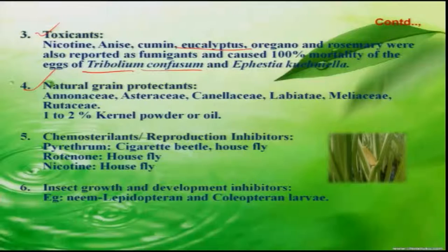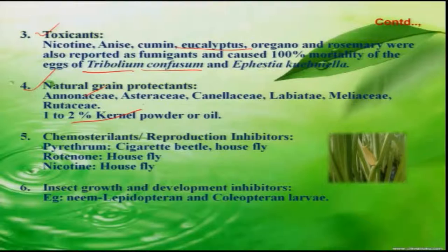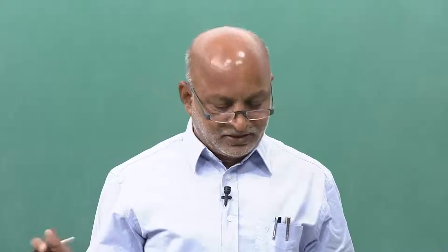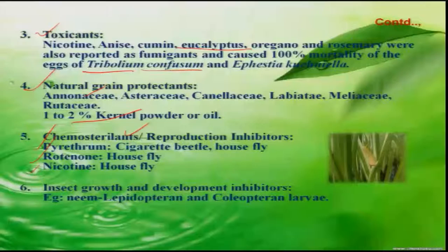Botanicals are also used as natural grain protectants. In most areas, including India, they are much used in management of stored grain pests. Among them, custard apple — one to two percent kernel powder or oil — is mixed for management of stored grain pests. Some botanicals act as chemosterilants, meaning they inhibit reproduction in insects. Among them are pyrethrum, rotenone, and nicotine, which inhibit the production of offspring.